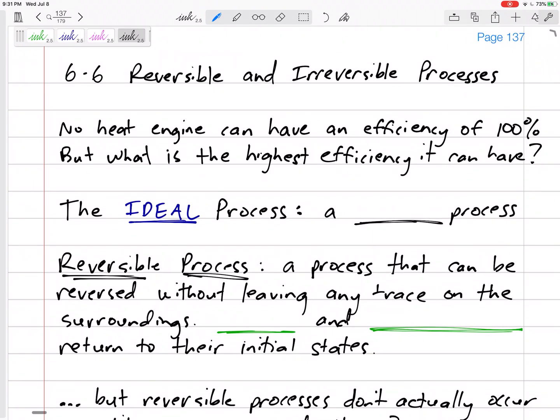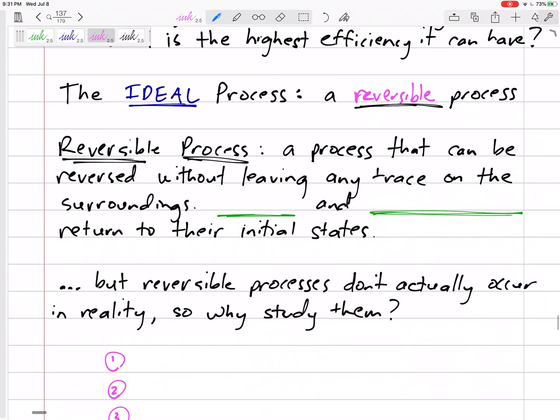Section 6.6 talks about ideal processes and reversible and irreversible processes. No heat engine can have an efficiency of 100%, but what's the best we can do? What's the highest efficiency it can have? That leads us to the ideal process, and the ideal process is a reversible process.